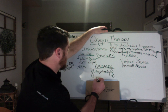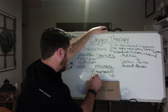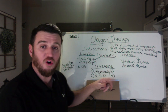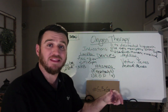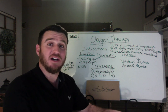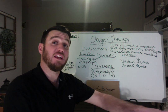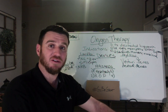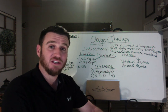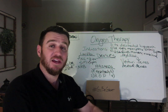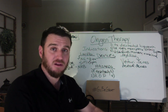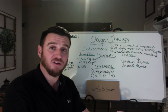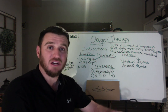The second hazard is ROP — retinopathy of prematurity. We're talking about premature neonatal babies, and you do not want to give them too much oxygen. Too much oxygen to a premature baby can lead to blindness. Remember: ROP, retinopathy of prematurity — that's bad. Turn your oxygen down.